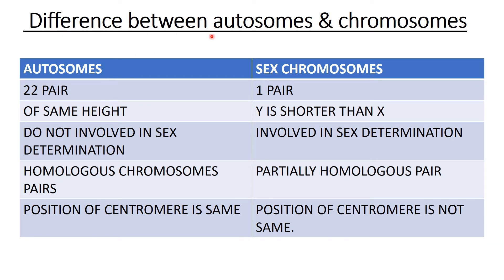There are some key differences you should know between autosomes and sex chromosomes in humans. There are 22 pairs of autosomes — 22 × 2 = 44 total autosomes. For sex chromosomes there is one pair: either XX giving rise to a female, or XY giving rise to a male. Also, autosomes are of the same height, but the Y chromosome is shorter than X — X is 5 times bigger than Y.